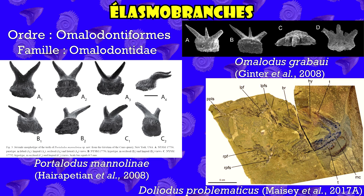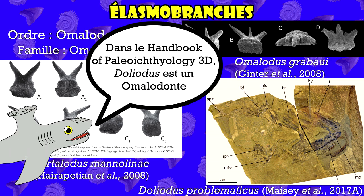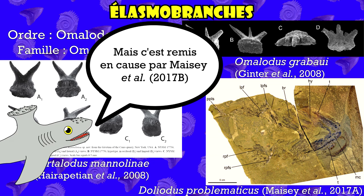Doliodus, le plus ancien requin découvert à ce jour, semble être proche de cet ordre, voire d'en faire partie, si j'ai bien compris l'article de Ginter et Thal en 2008. Mais rien d'affirmatif encore à ce sujet, je n'ai pas envie de trop m'avancer sur ce cas. Que la prudence soit de mise !